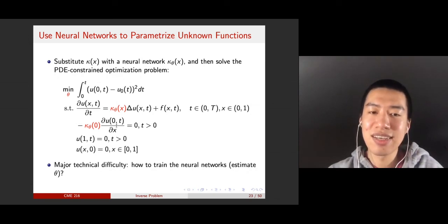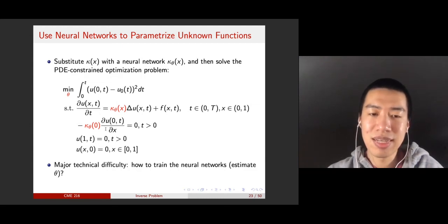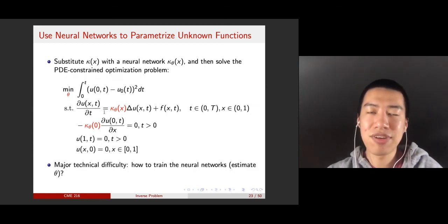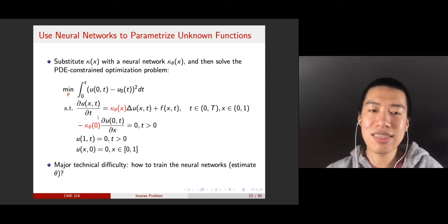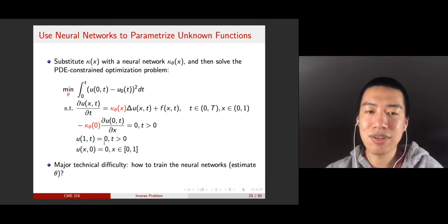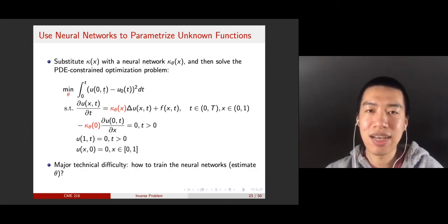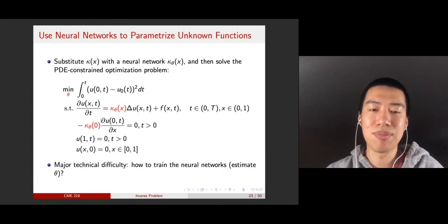Another challenge is that even if you use automatic differentiation, as shown in parameter inverse problems, many numerical PDEs are very stiff, so you want to use special solvers, including implicit solvers for stability, and that is not straightforward for automatic differentiation. These are the new challenges arising from this neural network approximation approach. In the next few lectures, we will discuss techniques to train neural networks within a PDE system.